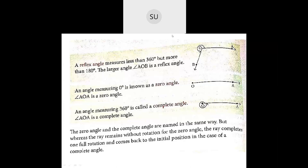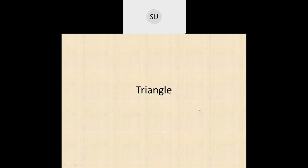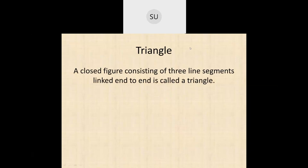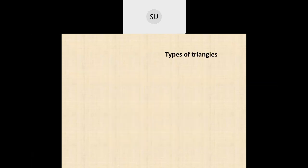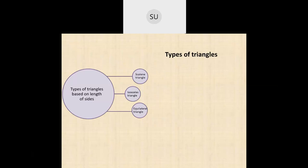Now we will see what are triangles. A triangle is a closed figure consisting of three line segments linked end to end — it is a three-sided plane closed figure. We saw two types of triangles: one based on the measurement of the length of the sides, and another based on the measurement of the angles.